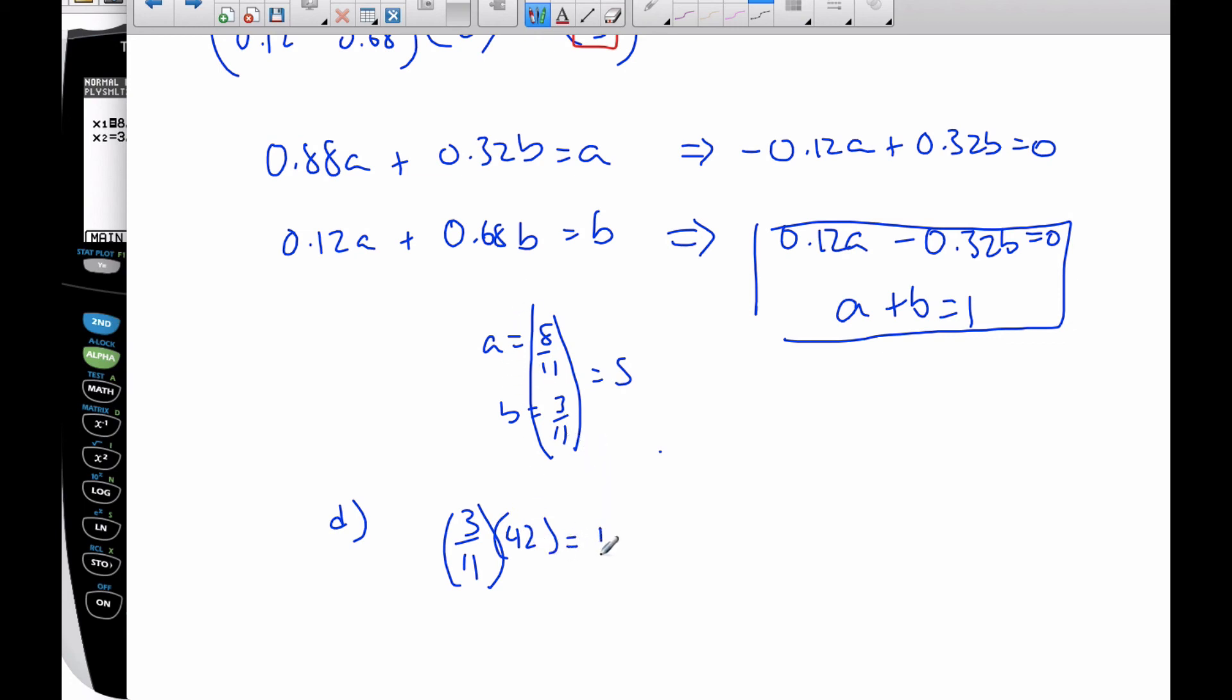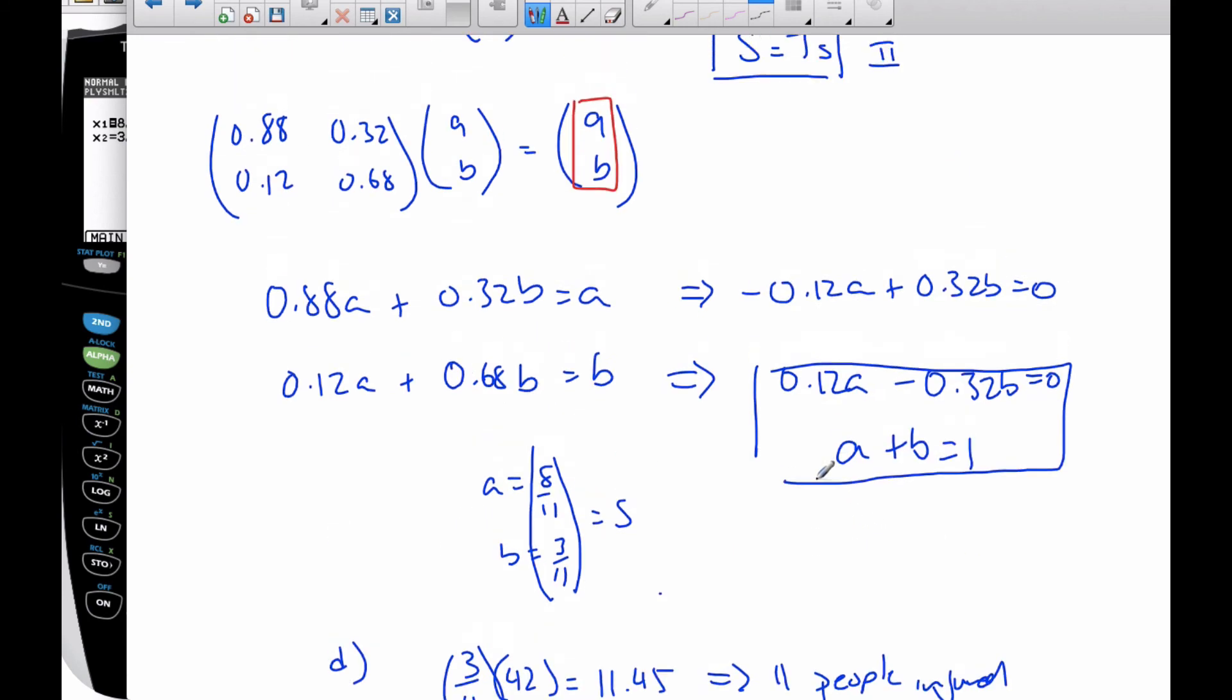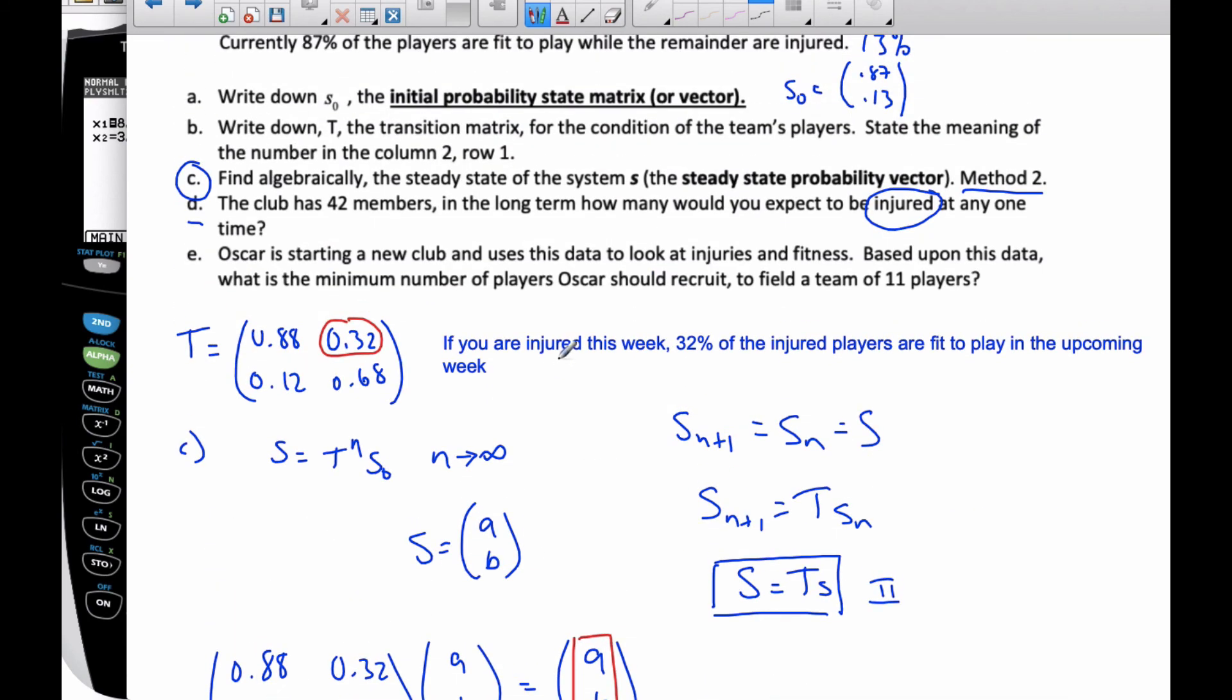And when I do it, I end up with 11.45 injured people. So that really means I'm going to have 11 people injured. In the long term, that's how many people I would expect in my 42-member club long term to be injured.